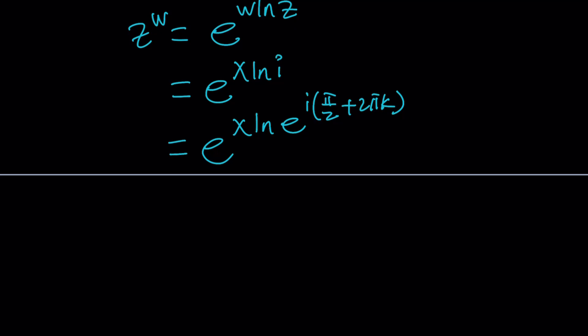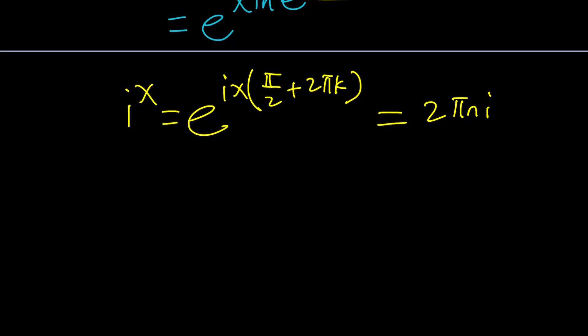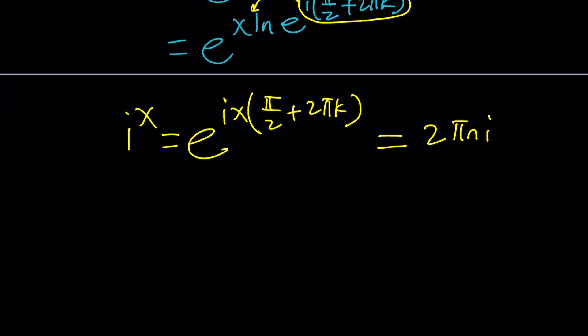So, from here, we're going to go ahead and bring this down to the front. Properties of logarithms. So, that's going to become e to the power ix times pi over 2 plus 2 pi k. Now, this is i to the power x, remember? And this is equal to, well, that contains ix, 2 pi n i. So what we need to do now is use the complex logarithm. So let's go ahead and natural log both sides.